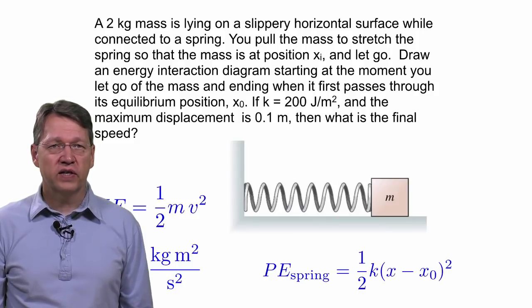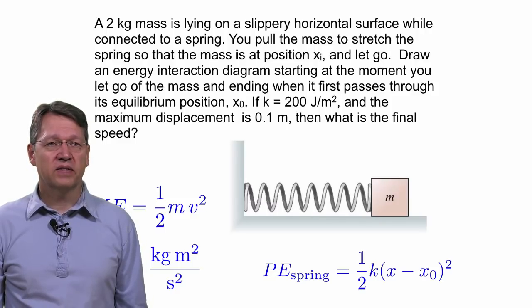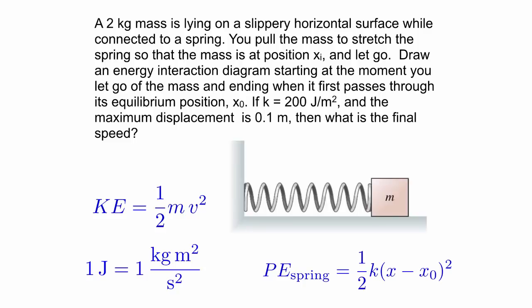Draw an energy interaction diagram starting at the moment you let go of the mass and ending when it first passes through its equilibrium position x0. If k equals 200 joules per meter squared and the maximum displacement is 0.1 meters, then what is the final speed?